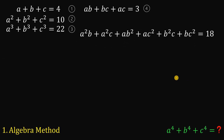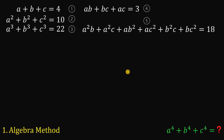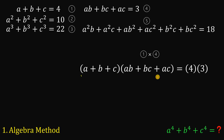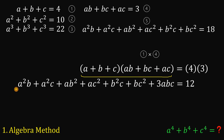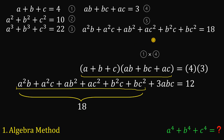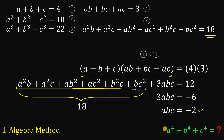Now let's get the product of equation one and equation four, multiplying (a plus b plus c) by (ab plus bc plus ac). We get an expression that is exactly the same as equation five, so it equals 18. From this, 3 times abc equals 12 minus 18, which is negative 6. Dividing both sides by 3, we get abc equals negative 2. We'll call this equation six.